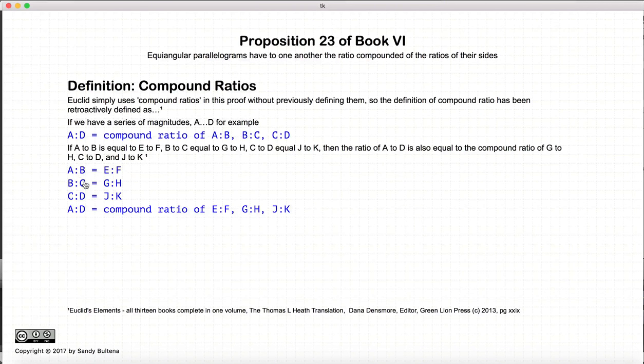So what does that mean when we say it's the compound ratio? Well, let's assume that A to B is equal to E to F, B to C is equal to G to H, and so on and so forth. So again, we are going to define the compound ratio of A to D is also going to be equal to the compound ratio of E to K.